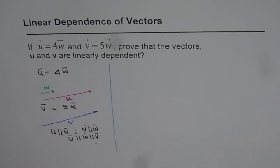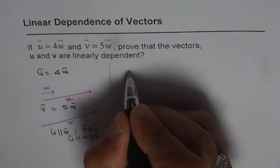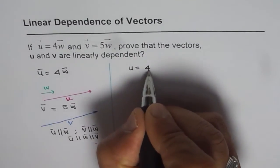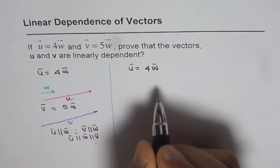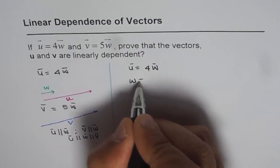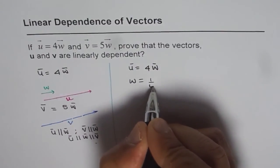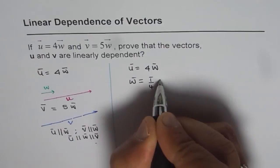The algebraic solution could be: we say u equals 4 times w, that means we could write w equals 1/4 of u.